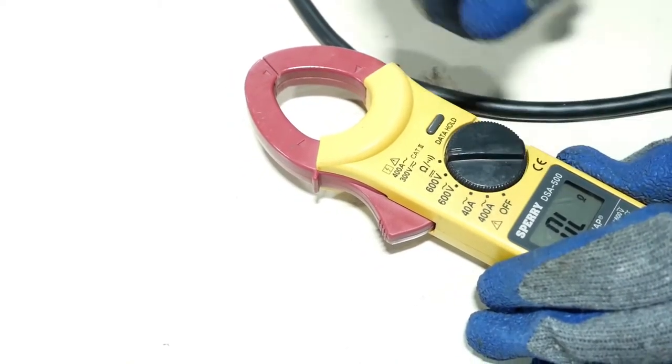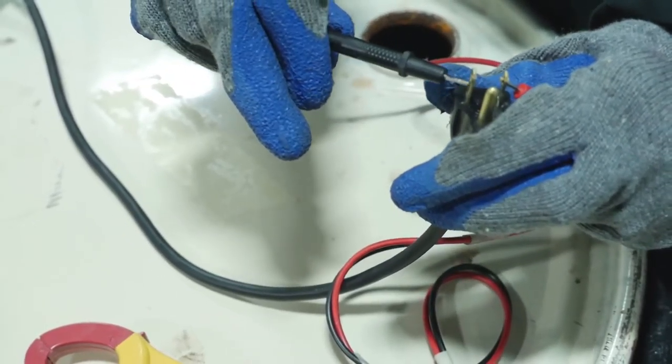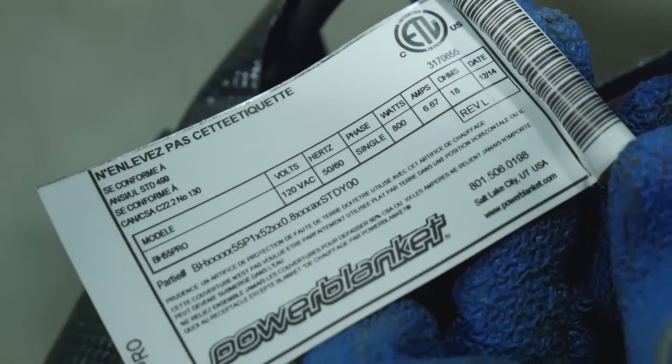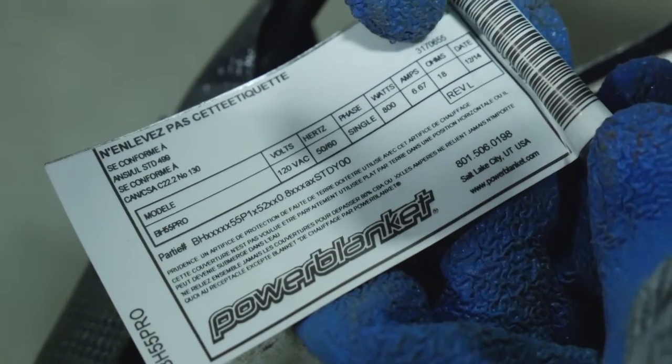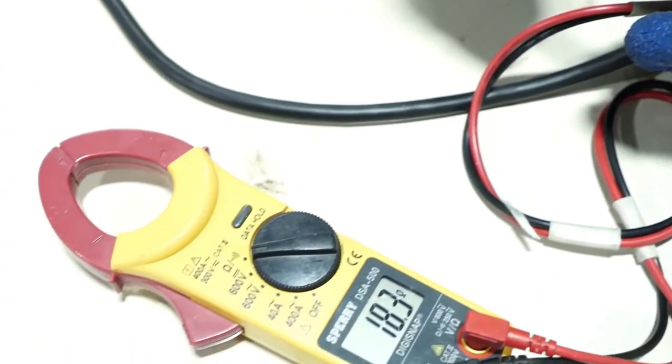Using an ohmmeter or multimeter, check the electrical resistance characteristics of the blanket. Set your multimeter on the lowest ohm setting before you begin testing. The reading should be within plus or minus 10% of the value on the cord tag. If it is outside of that range, the product may have been damaged.